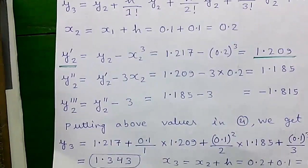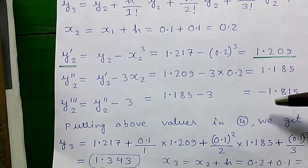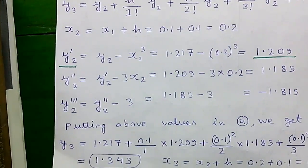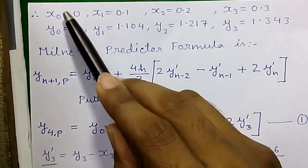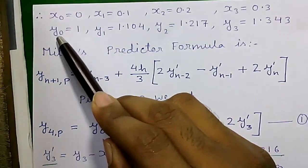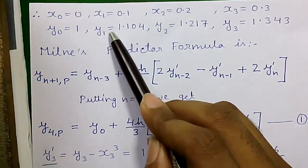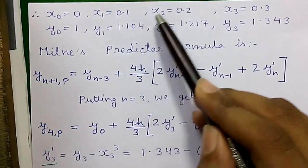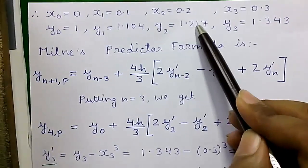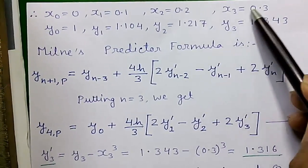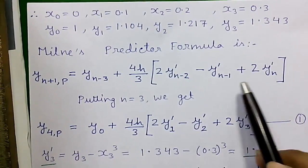Again the same process is used for y₃ — just pause the video and see the calculation. So now we have all 4 values of y: x₀ = 0 → y₀ = 1; x₁ = 0.1 → y₁ = 1.104; x₂ = 0.2 → y₂ = 1.217; x₃ = 0.3 → y₃ = 1.343.